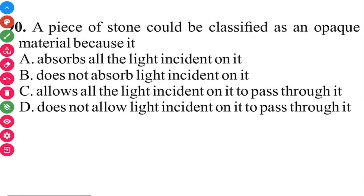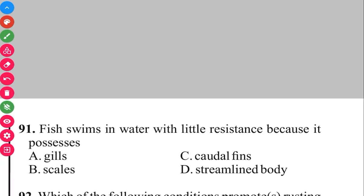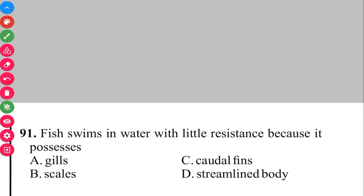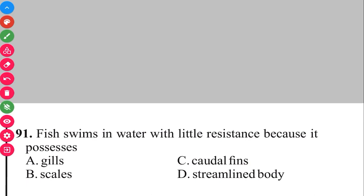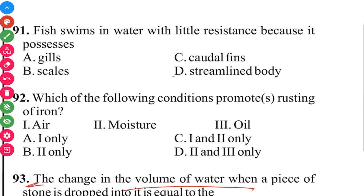Question 91. Fish swims in water with little resistance because it possesses a streamlined body. The answer in 3, 2, 1 is D. It has a streamlined body. It is able to swim or cut through the water.